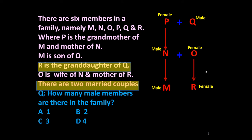Now we can answer the question very easily. There are three male members: Q, N, and M. There are also three female members. Once you have this family tree, you can answer any question based on it without any difficulty.